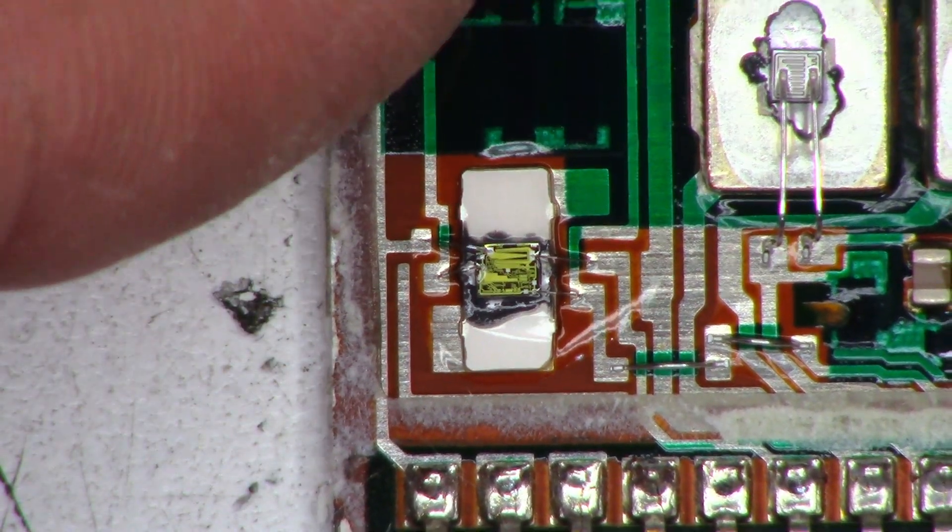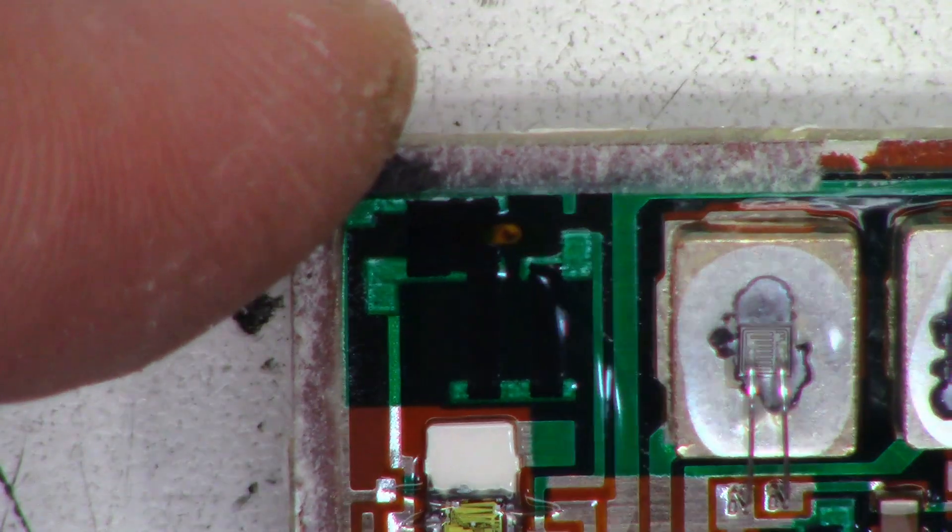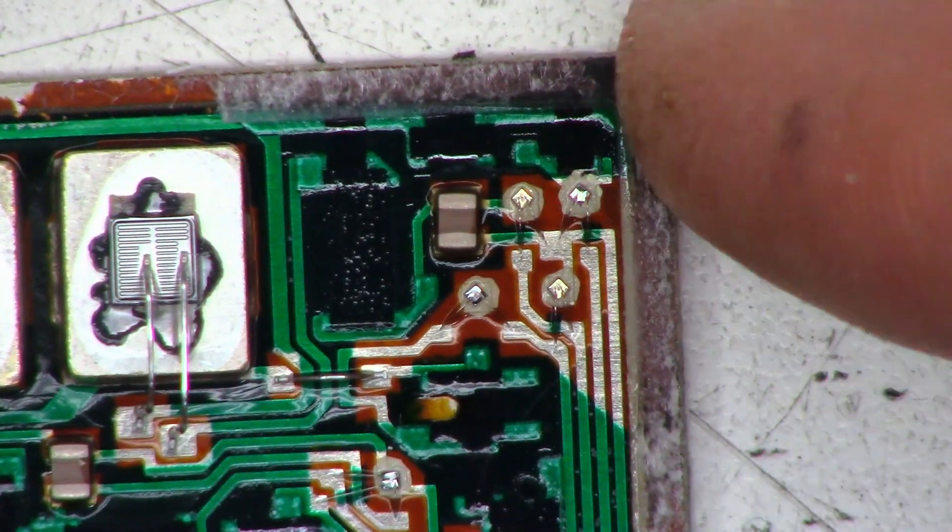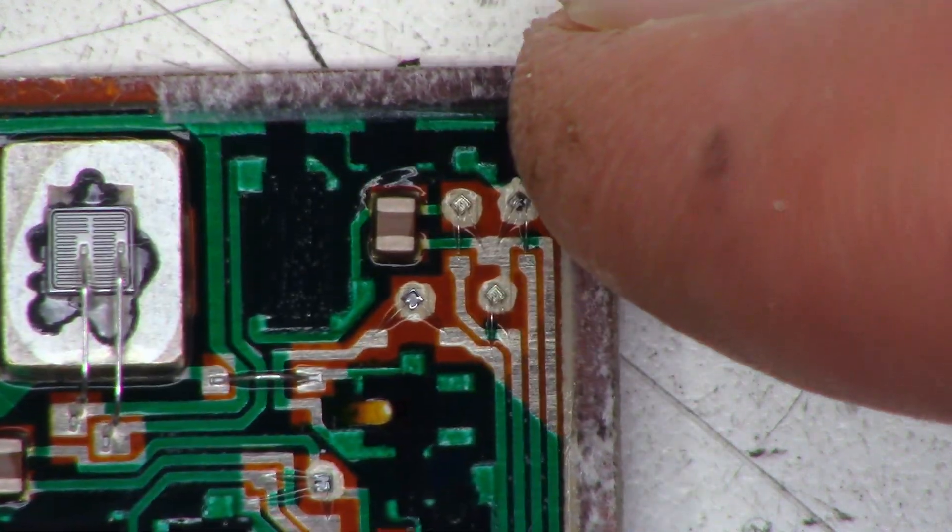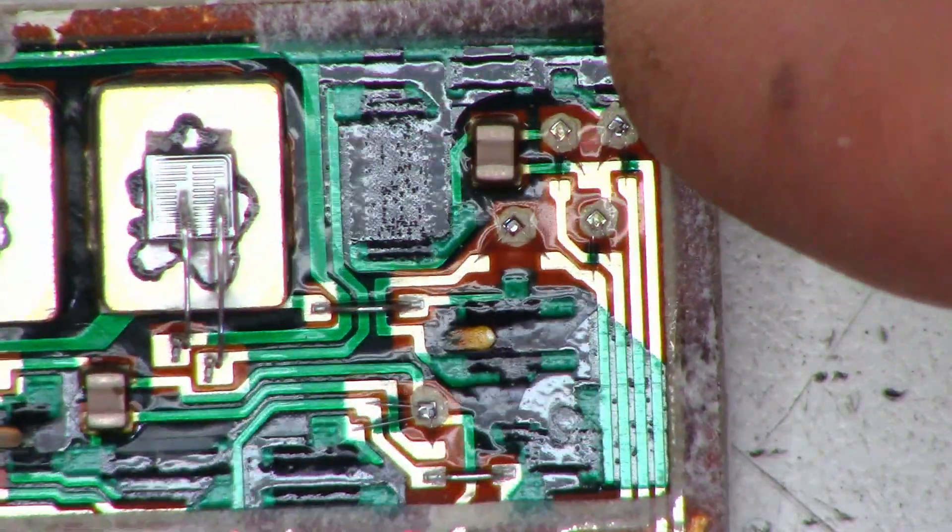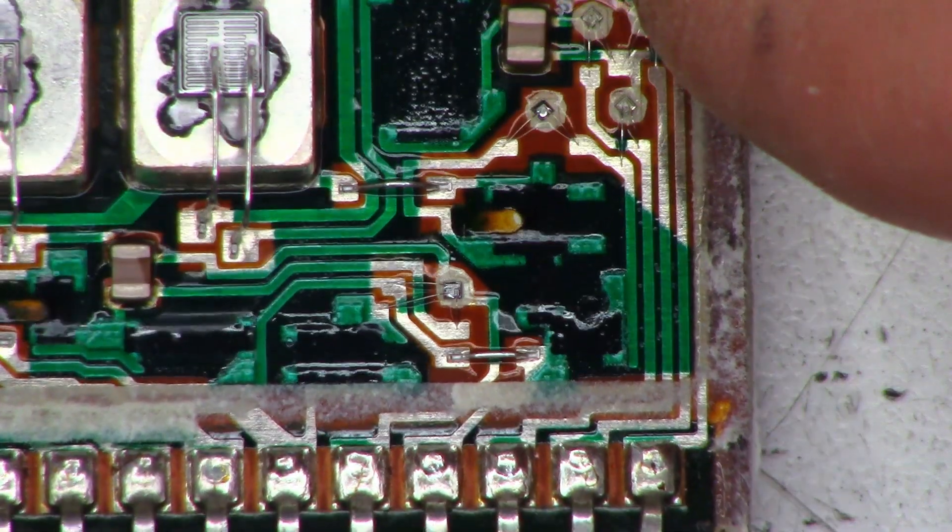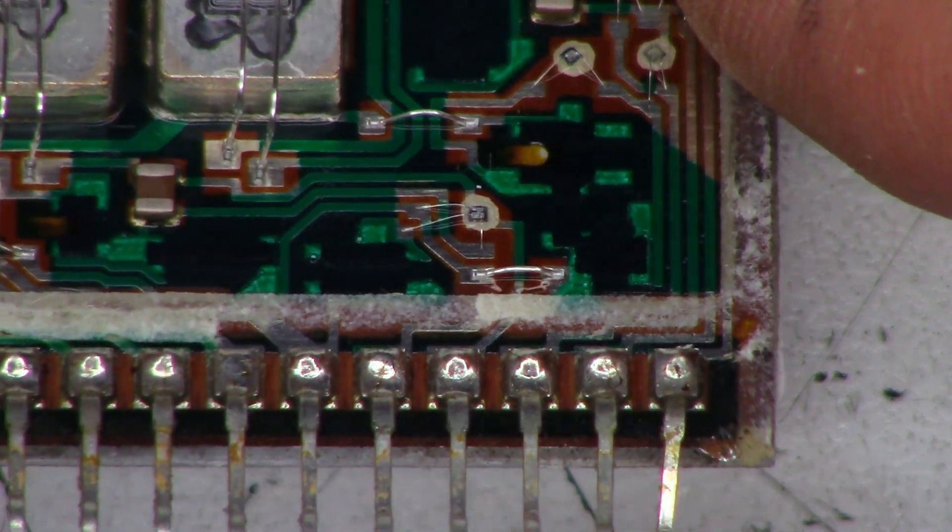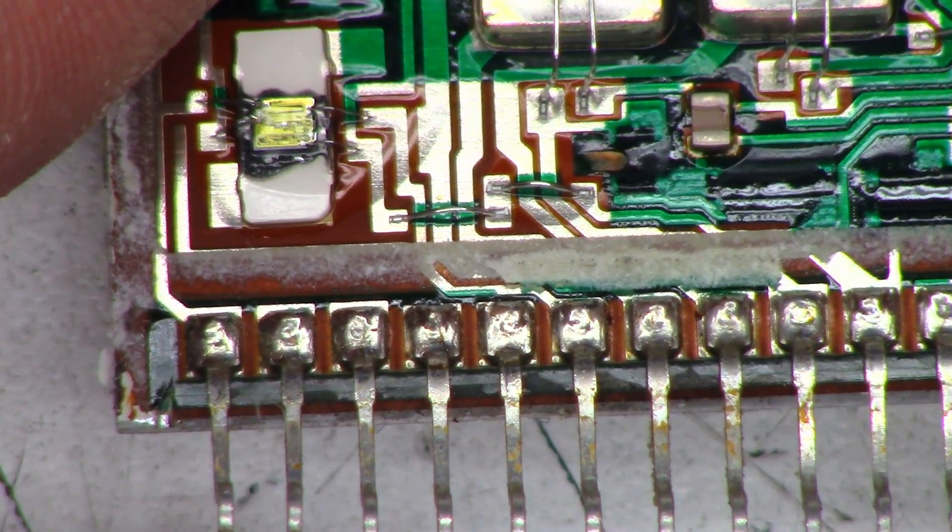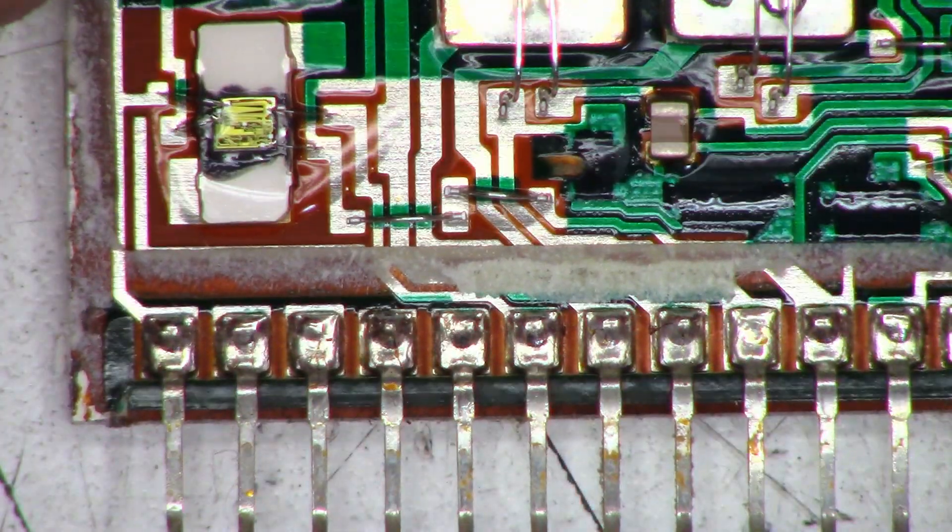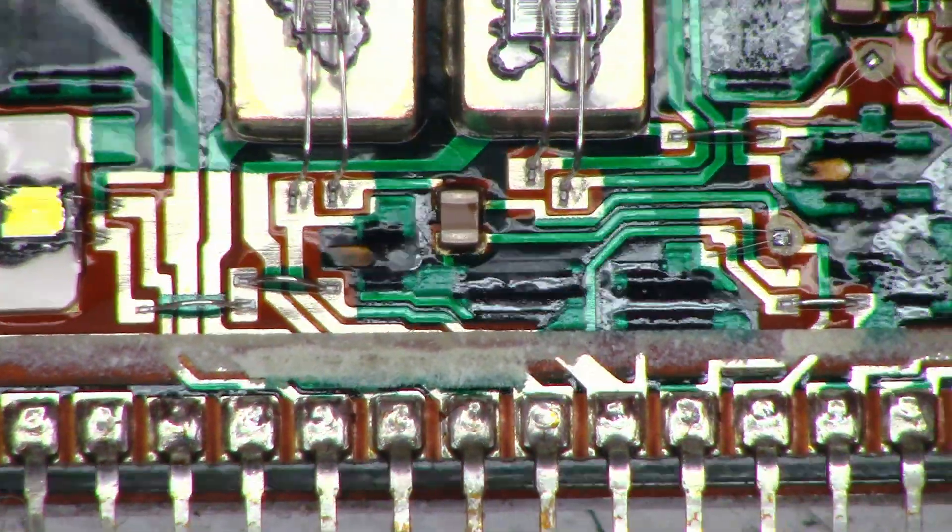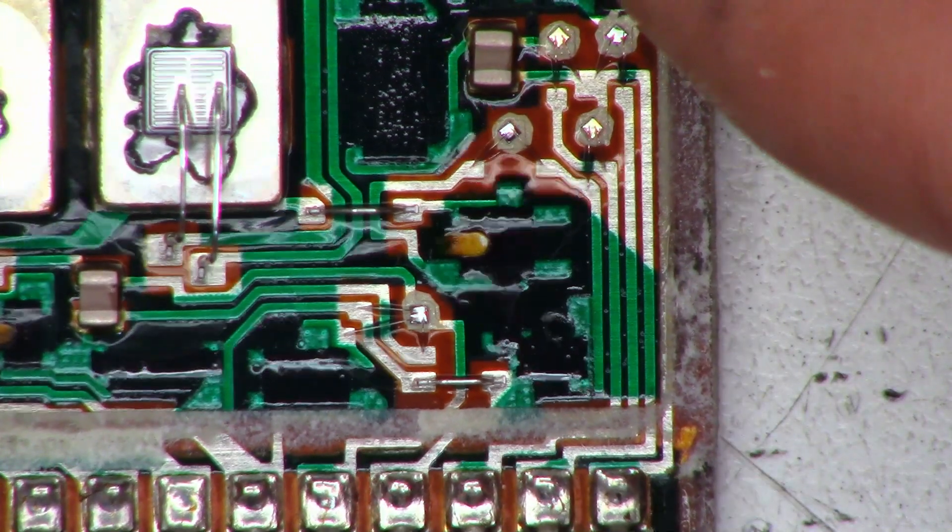That must be a regulator right there. Looks like discrete transistors there. So far everything looks good, at least in my estimation. Sometimes you'll find these pins break off. Everyone looks absolutely perfect, soldered excellently. So what happened to this thing? I don't really see any telltale signs of what might have caused it to fail.